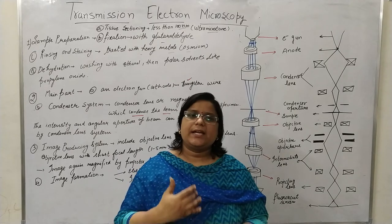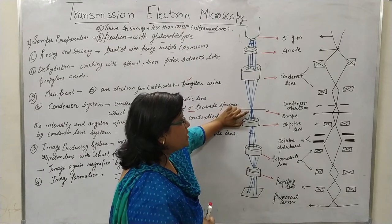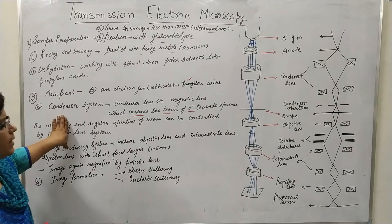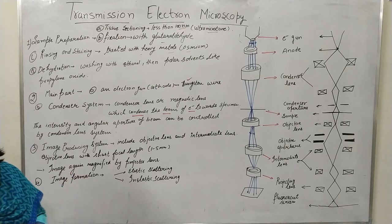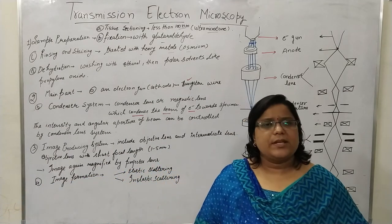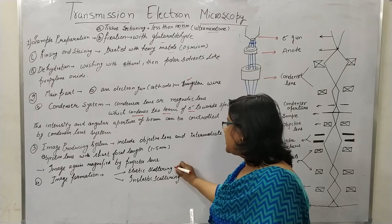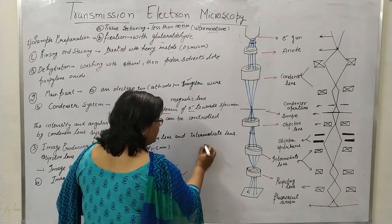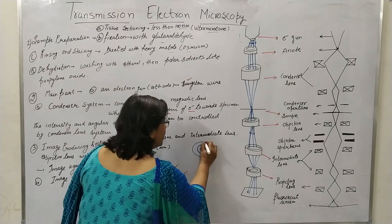Now we will understand how the electrons are transmitted and scattered. The electrons transmitted from the sample produce scattering. Image formation happens in two ways: Elastic Scattering and Inelastic Scattering. We need to understand what elastic scattering and inelastic scattering are and how they create the image.